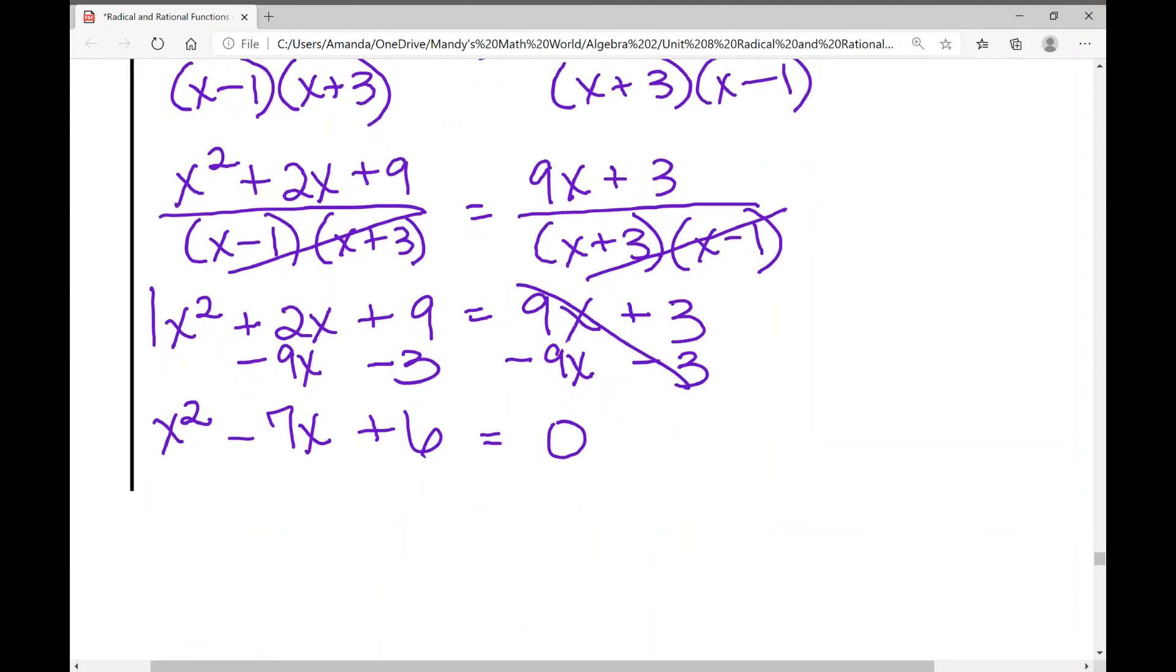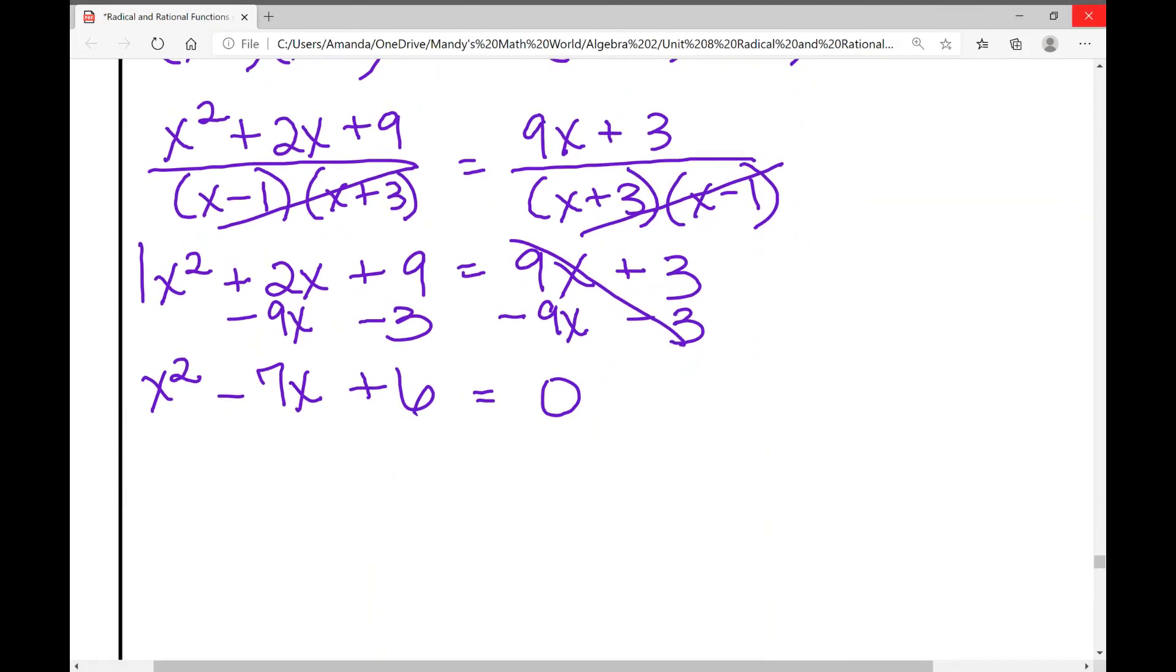It eliminates it from the right side, and I'm left with x squared minus 7x plus 6. So at this point, I need two numbers that multiply to 6 and add to negative 7. So I know the numbers have the same sign, and we're adding to negative 7. What are those numbers? Negative 6 and negative 1. So x minus 6 and x minus 1. That's how this factors. So now what do you do? You set each of those factors equal to 0, and you solve. So when I set each of those equal to 0, I get x equals 1 and positive 6.